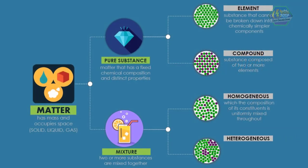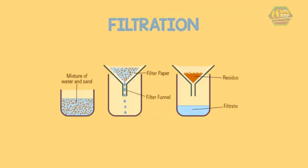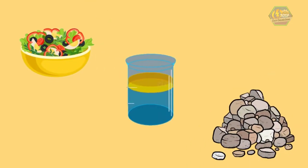Meanwhile, a heterogeneous mixture is a non-uniform mixture in which the components separate and the composition varies. Unlike the homogeneous mixture, heterogeneous mixture can be separated through physical processes. An example of a physical process used is filtration, which can easily separate the sand from the water in a sand-water mixture by using a filter paper. Some more examples of heterogeneous mixtures include salad dressing, rocks, and oil and water mixtures.